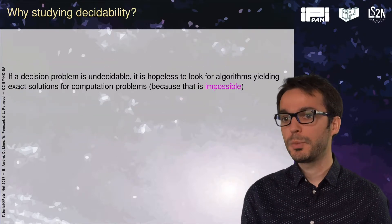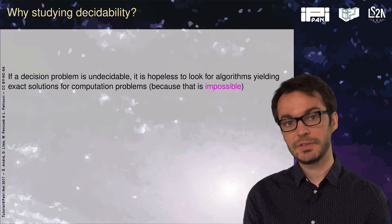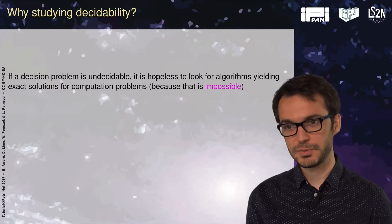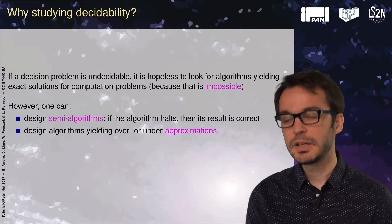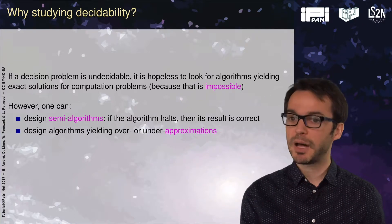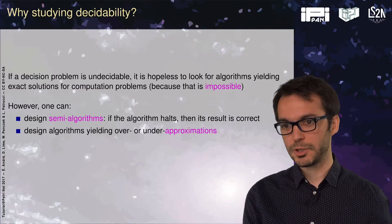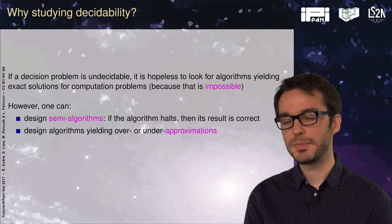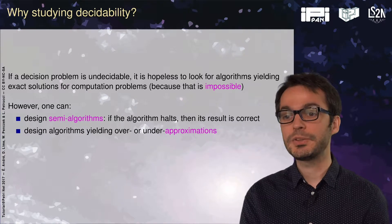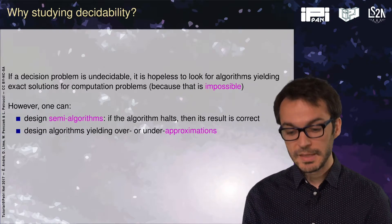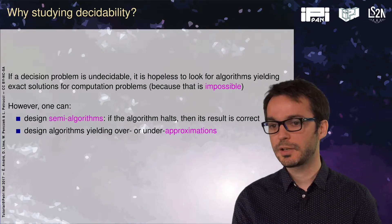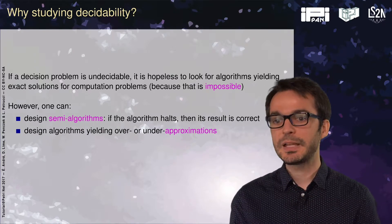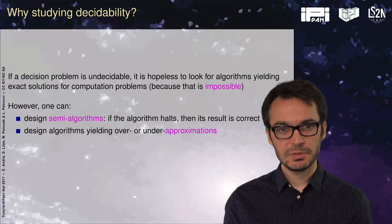So why should we bother with decidability? Because if a decision problem is not decidable, then it is hopeless to look for algorithms yielding exact solutions for computation problems — that is impossible. In particular, within synthesis, if we are interested in synthesizing parameter valuations, if the emptiness problem (knowing whether there is or there is no valuation reaching a state) is undecidable, then we are not able to synthesize all the valuations. However, we can still design semi-algorithms. A semi-algorithm is such that if the algorithm halts, then its result is correct, but it is not guaranteed to terminate. We can also design algorithms that yield over-approximations or under-approximations.